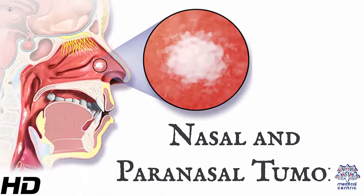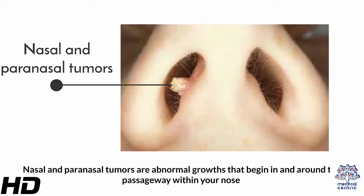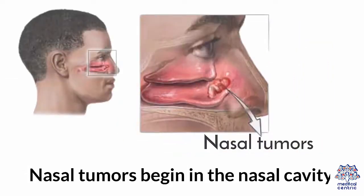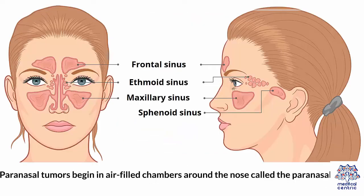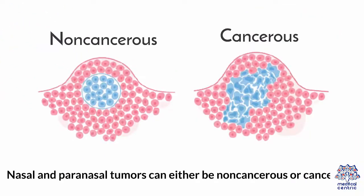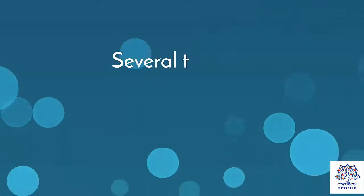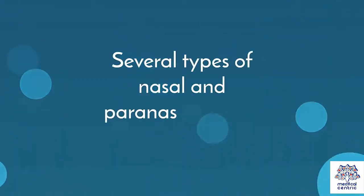Today's topic is nasal and paranasal tumors. Nasal and paranasal tumors are abnormal growths that begin in and around the passageway within your nose. Nasal tumors begin in the nasal cavity, while paranasal tumors begin in air-filled chambers around the nose, called the paranasal sinuses. Nasal and paranasal tumors can either be non-cancerous or cancerous, and several types exist.